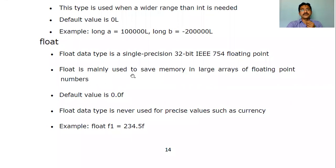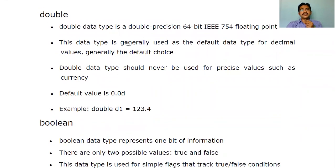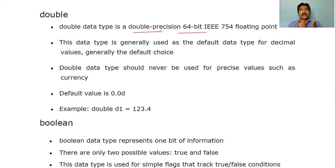Next data type is double — it consists of eight bytes, which is 64-bit. The difference between float and double is that float is single precision whereas double is double precision. Double precision means after the decimal point it can hold double the digits compared to float — float holds up to 6 digits after the decimal, while double holds approximately double that. The default value of double is 0.0d, where d stands for double.